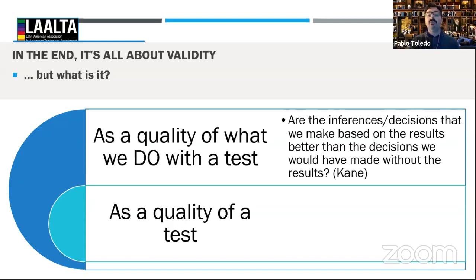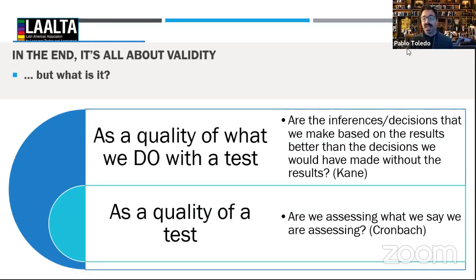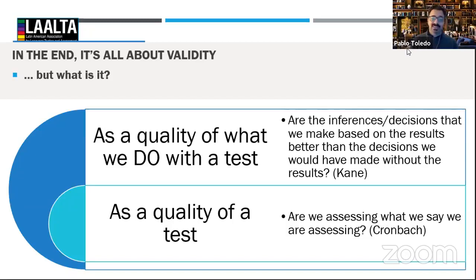If we think of validity as a quality of the test itself, this is the definition from Cronbach and the leading view from the 1930s through the 1990s: are we assessing what we say we are assessing? If you have a test of language competence, are you testing language competence and not something else? And are you testing everything that goes into competence? In the case of listening, if you test only global listening and not detailed listening, is that a valid test? This refers to what we call in assessment the 'construct' — is the test doing what it says on the box?